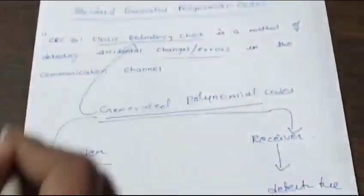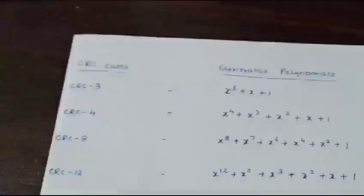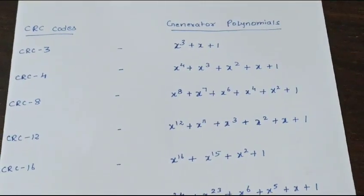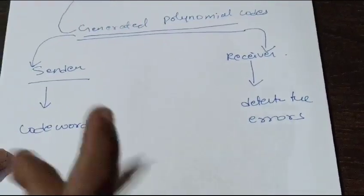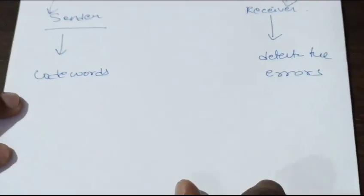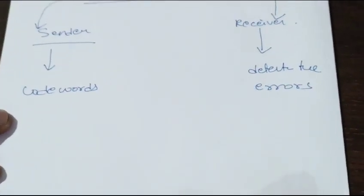We have different types of generated polynomial codes based upon the type of CRC we are using. These are some standard polynomials. We have nearly 12 different types of generated polynomials based upon the CRC technique.